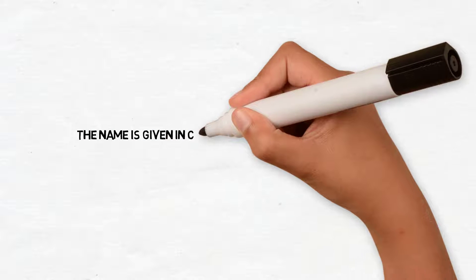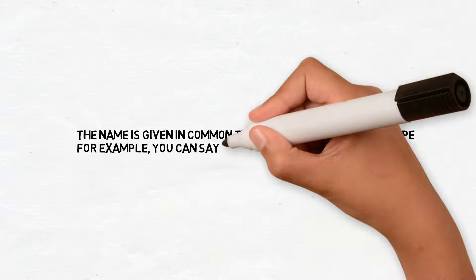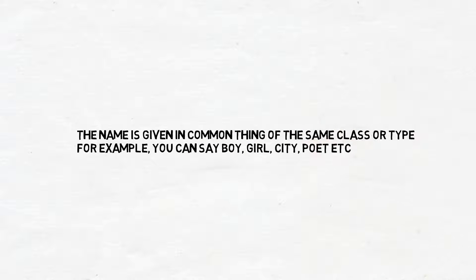So, common noun. The name is given in common to things of the same class or type. For example, you can say boy, girl, city, poet, etc.